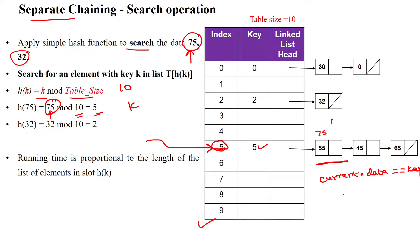If it is matching, data found; otherwise, not found. Now at index 5, it is mapping with 55 — no match. Then mapping with 45 — false. Then checking with 65 — also not matching. So data not found, because the next field of this node is null. It reaches the end of the list, so it says data not found.